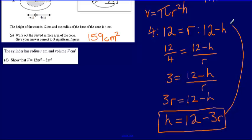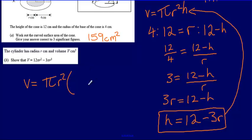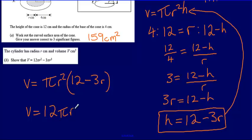All that's left is to plug the height into the formula. The volume is pi r squared multiplied by the height, which is 12 minus 3r. Expanding this bracket: pi r squared multiplied by 12 gives 12 pi r squared, and pi r squared multiplied by 3r gives 3 pi r cubed. That is exactly the same as what we've been asked to show.